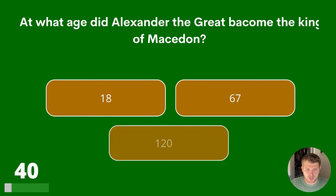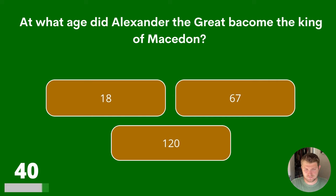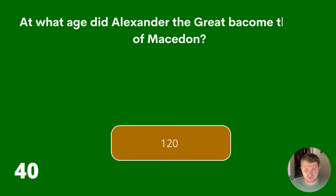Question 40. At what age did Alexander the Great become the King of Macedon? 18, 67 or 120? The answer is 20.